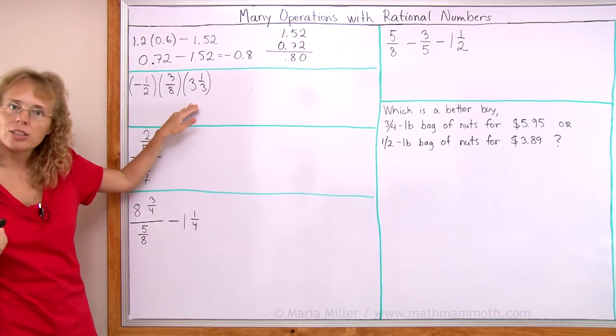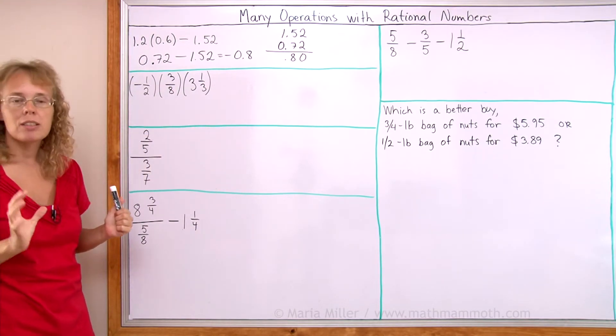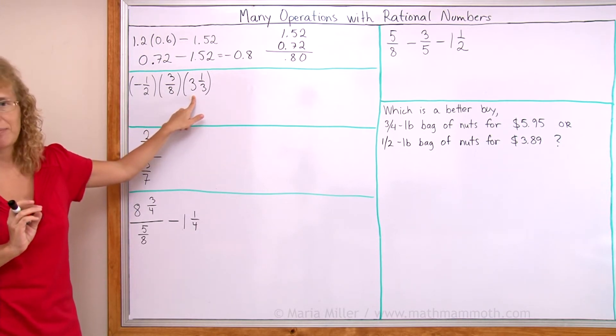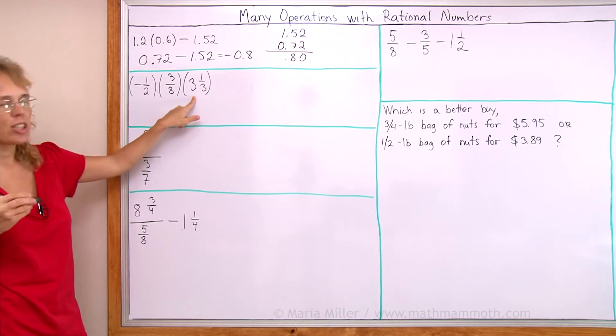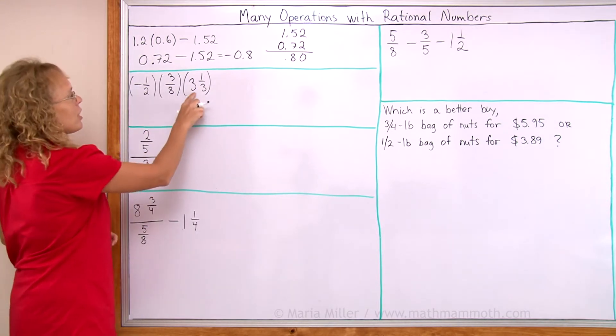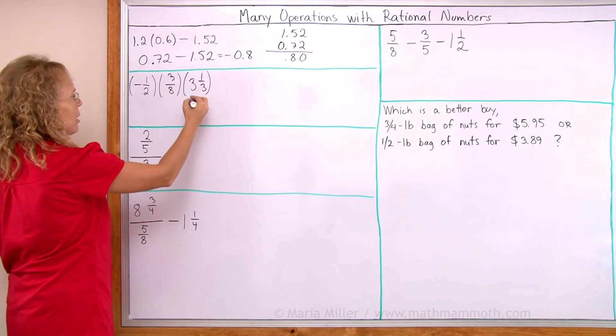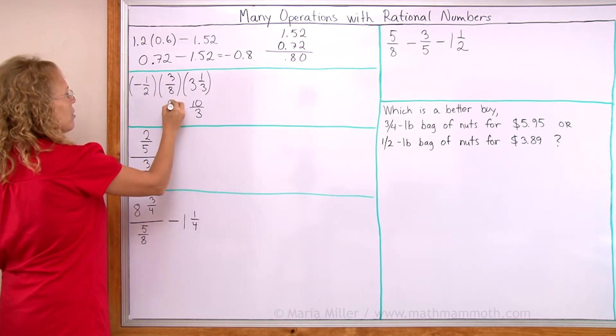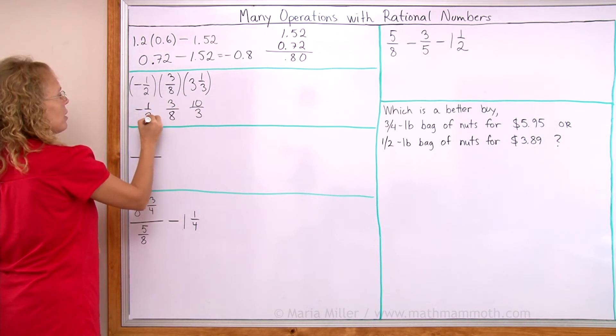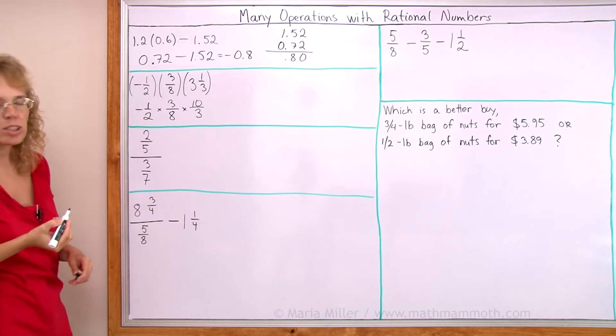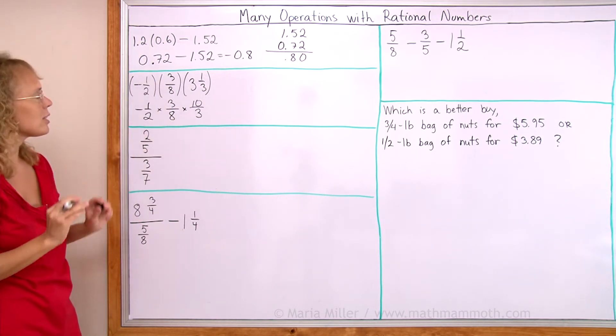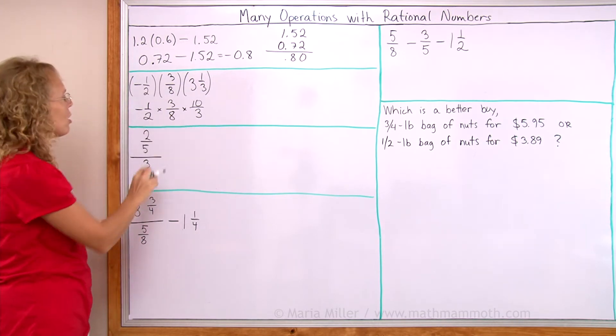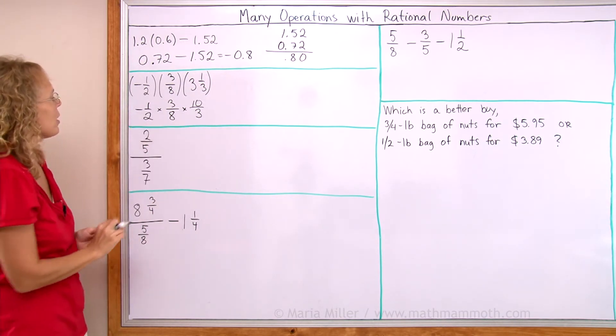Here, the fraction multiplication. We do it just normally using the normal fraction multiplication. The only thing is there's a mixed number here in between. So that means I need to change that into a fraction first. 3 times 3 is 9 plus 1. This would be 10 over 3. And then I have here 3 eighths and then negative 1 half. I'm writing the multiplication symbol there now instead of the parentheses. Either way is fine. The answer will be negative because there's one negative factor and then these two positives.